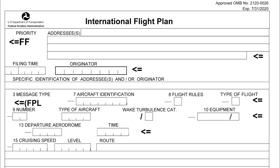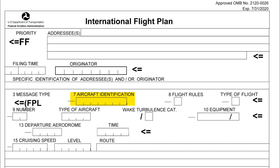First things first, items preceding item 7, which is the section highlighted in front of you right now, are to be completed by ETC and Comp Services, so we always leave it blank. In item 7, we insert either our call sign, flight number, or in case of general aviation, we put in our aircraft registration. So just make sure the letters are all in capital.